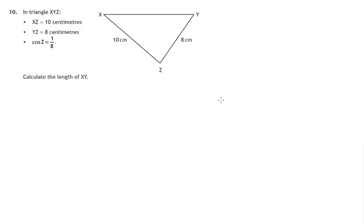Hi, Mr. Corsi here. In this question we're given a triangle X, Y, Z, a couple of lengths given, and we're told that the cosine of this angle is 1 eighth. We're asked to calculate XY. Now on the face of it, it looks fairly right-angled. You'd think maybe this is Pythagoras, but you'd be wrong because you cannot assume in a question like this unless you're told that the triangle is right-angled.